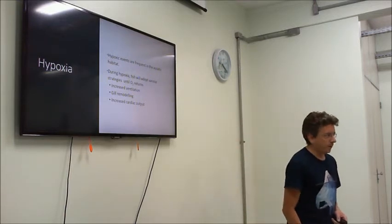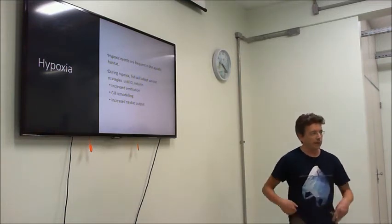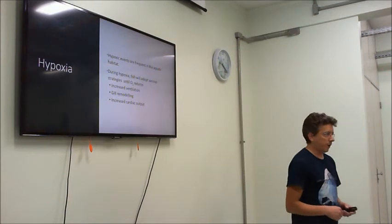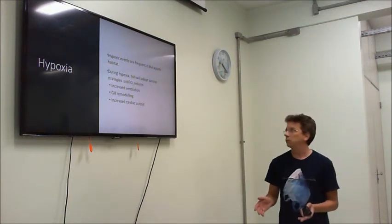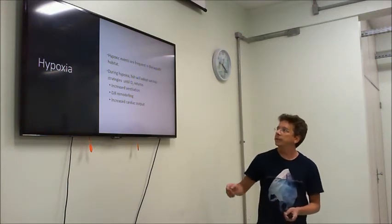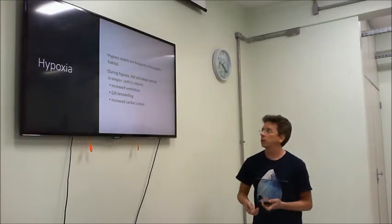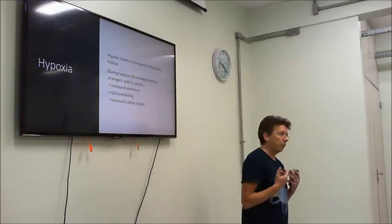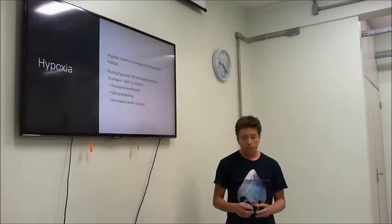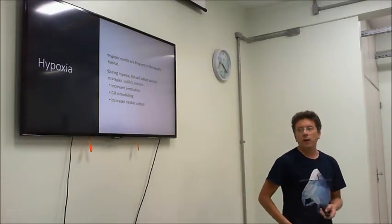During hypoxia - you know that better than me, we are in the Amazon - hypoxic events are really frequent. During hypoxia, fish will have to adopt different strategies to spare ATP until oxygen returns. These strategies will include increased ventilation, so they will breathe faster to extract more oxygen. They will often remodel their gills to extract more oxygen from the environment. They will also have things like bigger heart and increased cardiac output, so they circulate this oxygen better in their body.